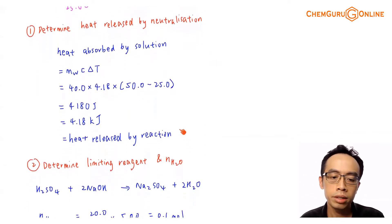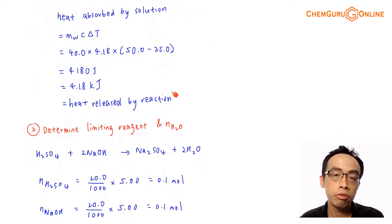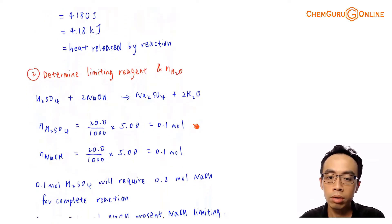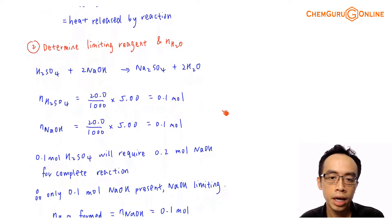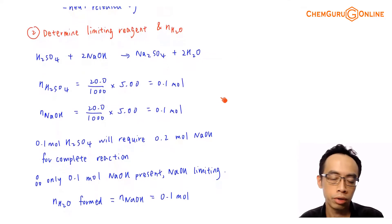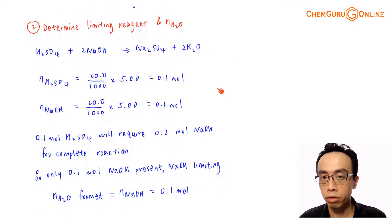Now the next thing we want to determine is I have to determine the limiting reagent and I want to calculate the number of mole of water that is formed during this neutralization. Because enthalpy change of neutralization is with respect to per mole of water, so I have to first find limiting reagent between sulfuric acid versus sodium hydroxide. Who is limiting? Then based on the limiting reagent, I find how much water is being formed during this neutralization.